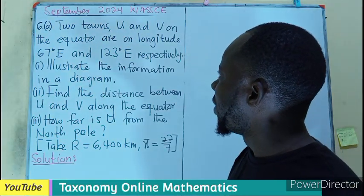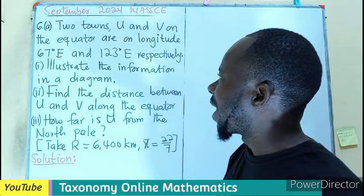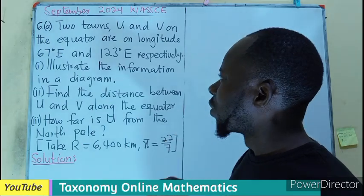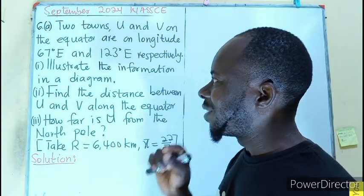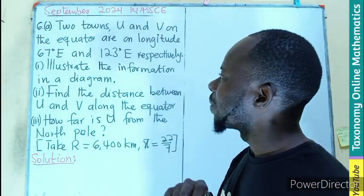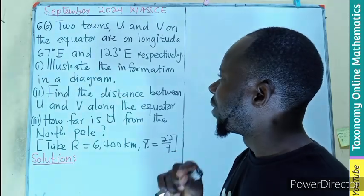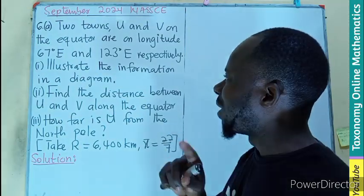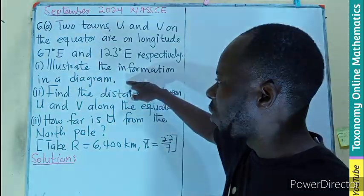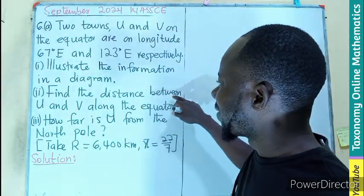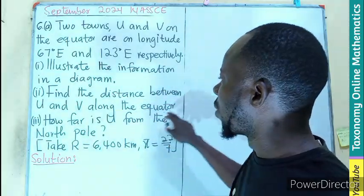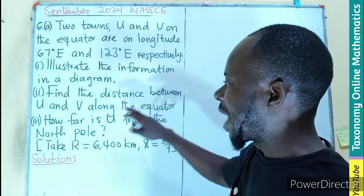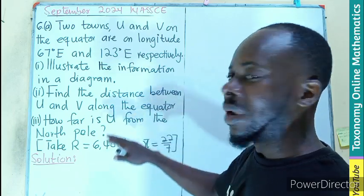Two towns, U and V, on the equator are on longitude 67 degrees east and 123 degrees east, respectively. We have to illustrate the information on a diagram, find the distance between the two towns along the equator, then find how far is U from the North Pole.